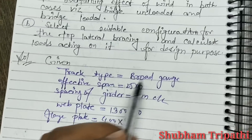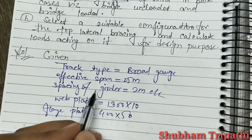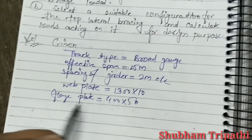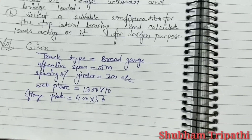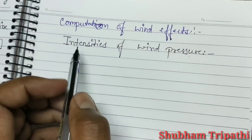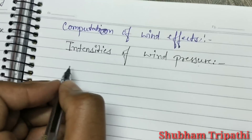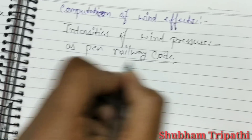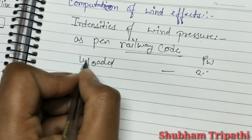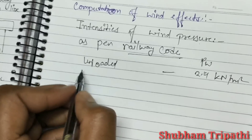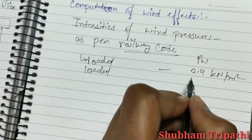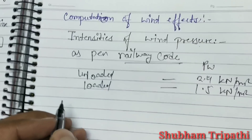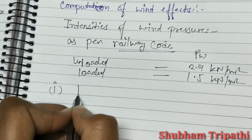Let's write all the given data: track type is broad gauge, effective span is 25 m, spacing of girders is 2 m, web plate is 1900 × 10 mm, and flange plate is 400 × 50 mm. As per the railway bridge code, the intensity of wind pressure for the unloaded condition is 2.4 kN/m² and for the loaded condition it is 1.5 kN/m².